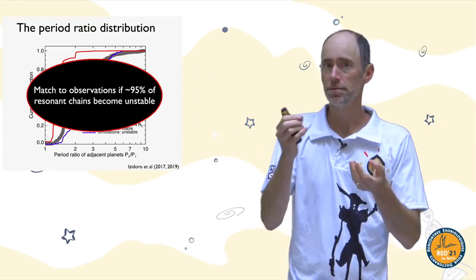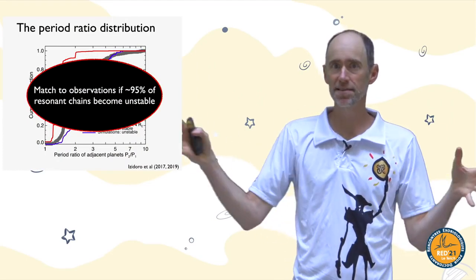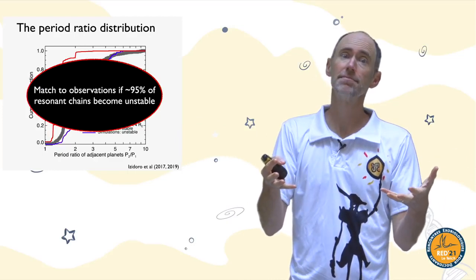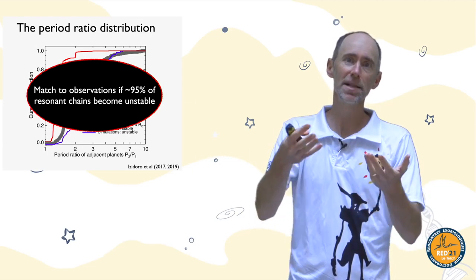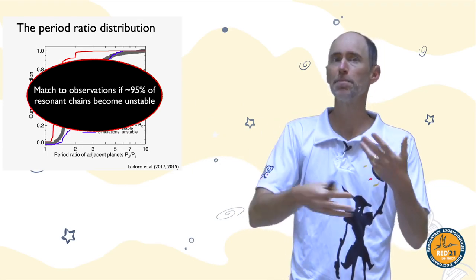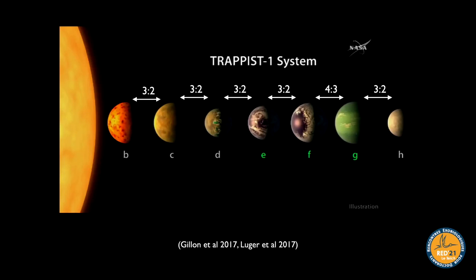In very simple terms, if you mix together the red and blue distributions you can match the gray observed one, because the result is in between. Doing the statistics, about 95–99% of systems need to go unstable after the gas goes away to match the period ratio distribution. So the story holds: most super-Earth systems went through a resonant chain phase, but most chains then broke, and the planets we see were shaped by that final collisional phase.